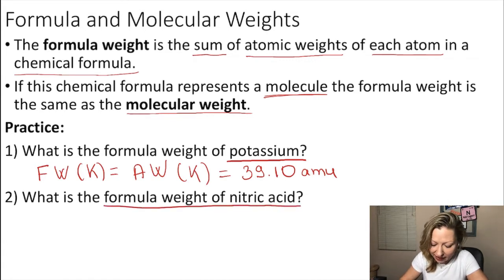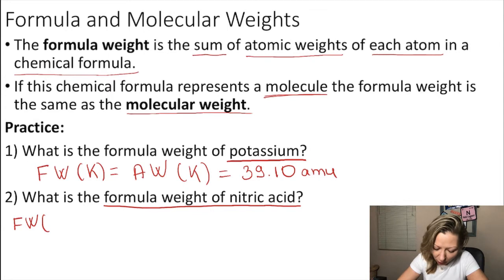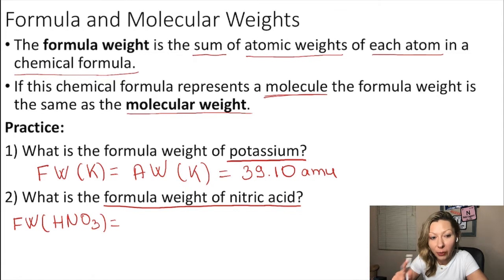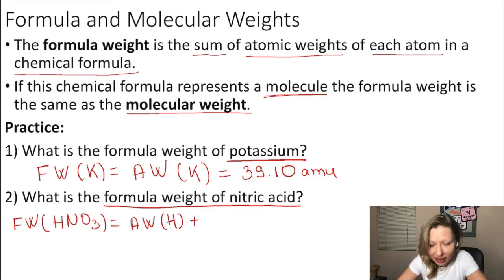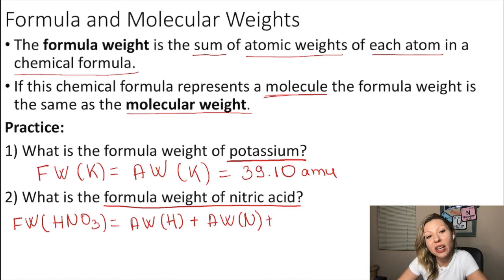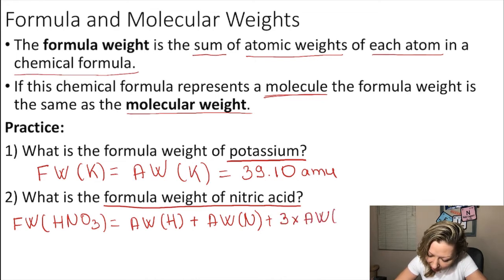What is the formula weight of nitric acid? The formula is HNO₃. We need to take the sum of the atomic weights of each atom. How many hydrogen atoms do we have in nitric acid? Only one. So we take the atomic weight of hydrogen, plus the atomic weight of nitrogen — we have one nitrogen — plus three times the atomic weight of oxygen, since we have three oxygen atoms.